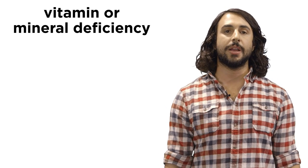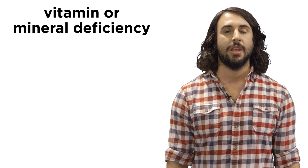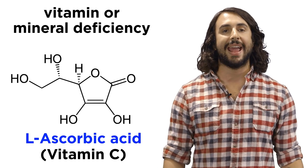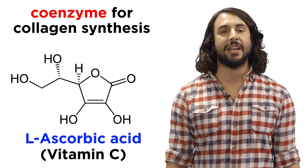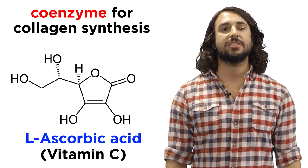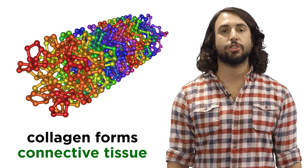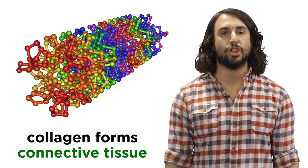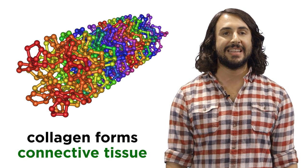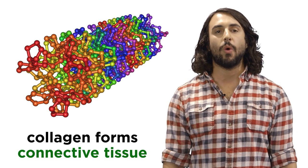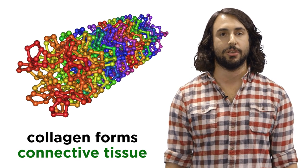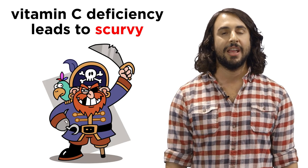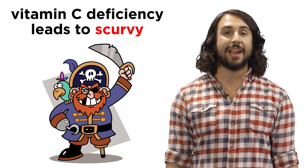Some diseases are the result of some kind of deficiency in an essential vitamin or mineral. Take vitamin C for example. This molecule, also called L-ascorbic acid, acts as a coenzyme in certain enzymatic pathways, such as collagen synthesis. Collagen, a structural protein present in connective tissue, is the most abundant protein in the human body, and vitamin C is needed to activate the enzyme that performs one of the steps in synthesizing collagen. If we do not consume enough vitamin C, collagen synthesis is impaired, and we get scurvy, like a pirate on the high seas.